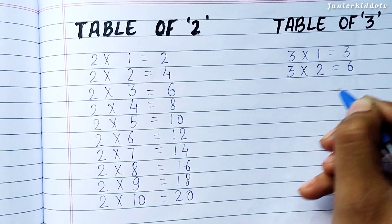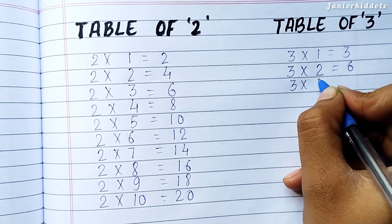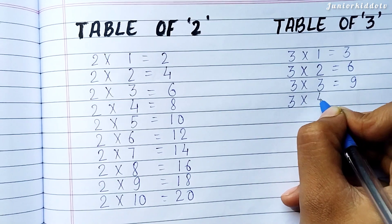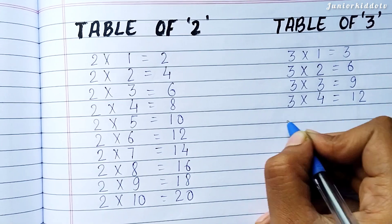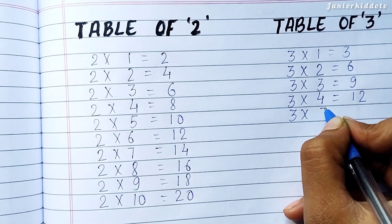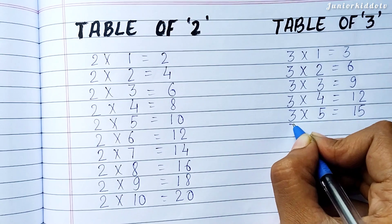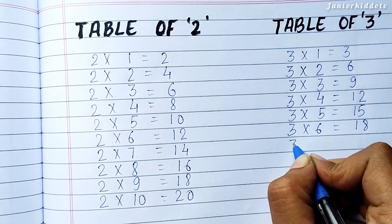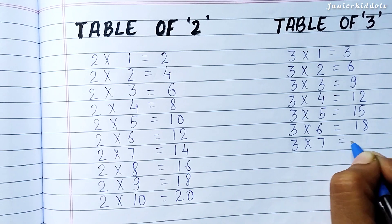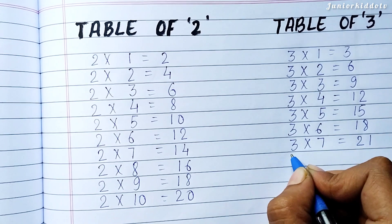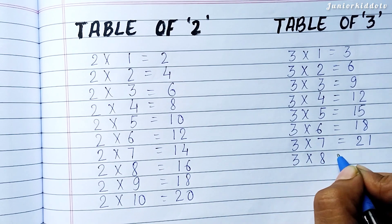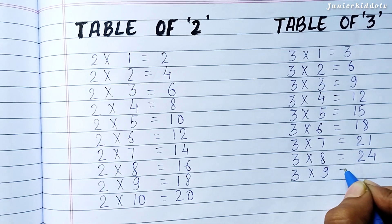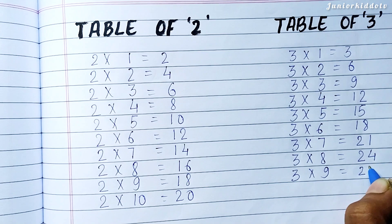Three Twos are Six. Three Threes are Nine. Three Fours are Twelve. Three Fives are Fifteen. Three Sixes are Eighteen. Three Sevens are Twenty One. Three Eights are Twenty Four. Three Nines are Twenty Seven.